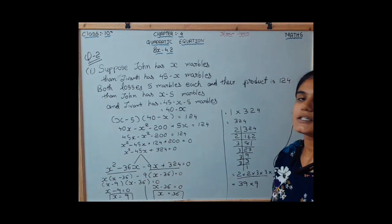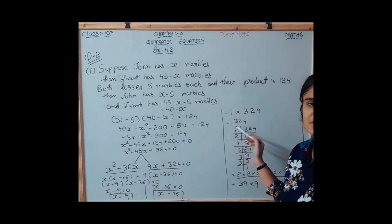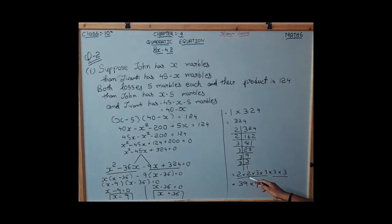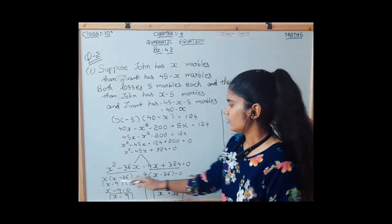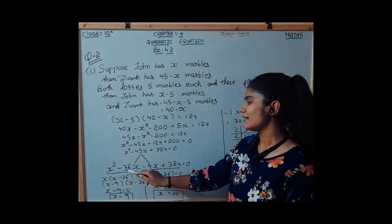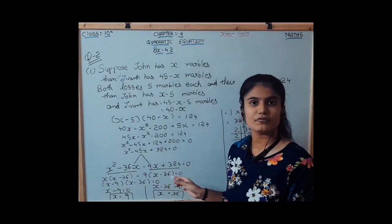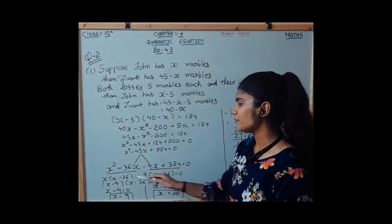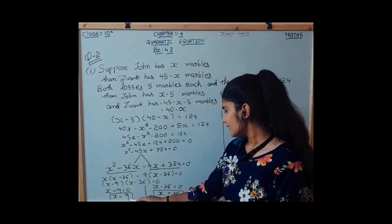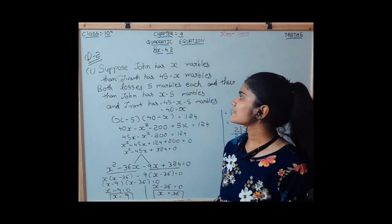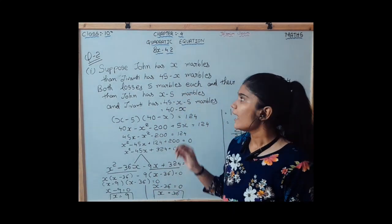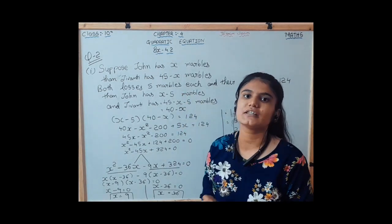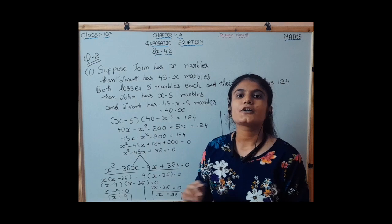We multiply the coefficient of the first term and the constant: 1 into 324 equals 324, with factors 36 and 9. The four-term equation is x squared minus 36x minus 9x plus 324 equals 0. By pairing and taking common, we get the roots 9 and 36. So John has 9 marbles and Jivanti has 36, or John has 36 and Jivanti has 9 — two possible answers.